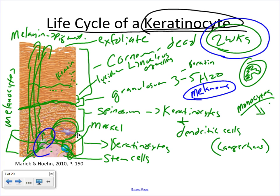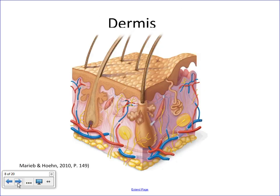That is the life cycle of a keratinocyte — how the cells go from beginning to end, and how we create this physical barrier, the number one feature of skin. Now, the dermis is the thickest part of our skin, ranging from about 0.6 millimeters to about 3 millimeters in thickness depending on what area of the body you're talking about.